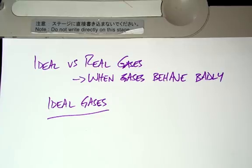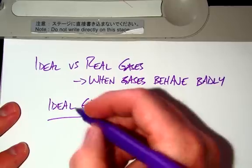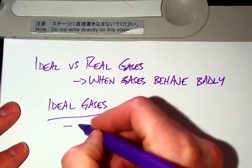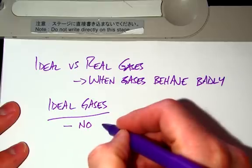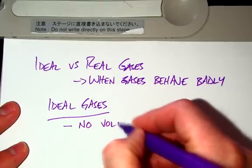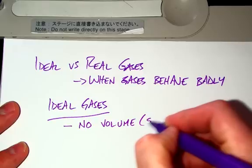So first we need to discuss what ideal gases are. Ideal gases are gases that behave exactly as they should under every single circumstance. Ideal gases have the properties of taking up no volume. When we're talking about volume, volume is the space.